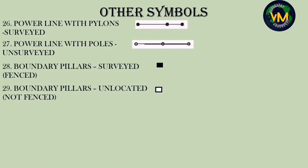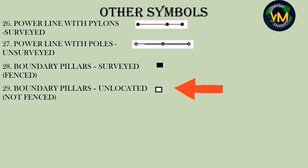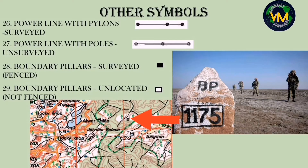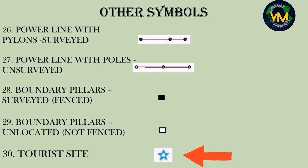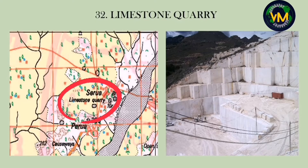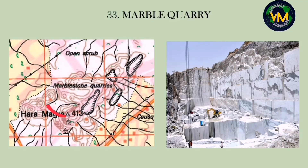Numbers twenty-eight and twenty-nine are boundary pillars. A shaded square indicates a survey pillar, which is usually fenced. Black and white indicates an unlocated pillar, which is not fenced. You can see them near settlement Abu. Number thirty is a tourist site, represented by a blue star. Number thirty-one, a stone quarry, is where you mine stone; a limestone quarry is where you extract limestone; and a marble stone quarry is where you extract marble.